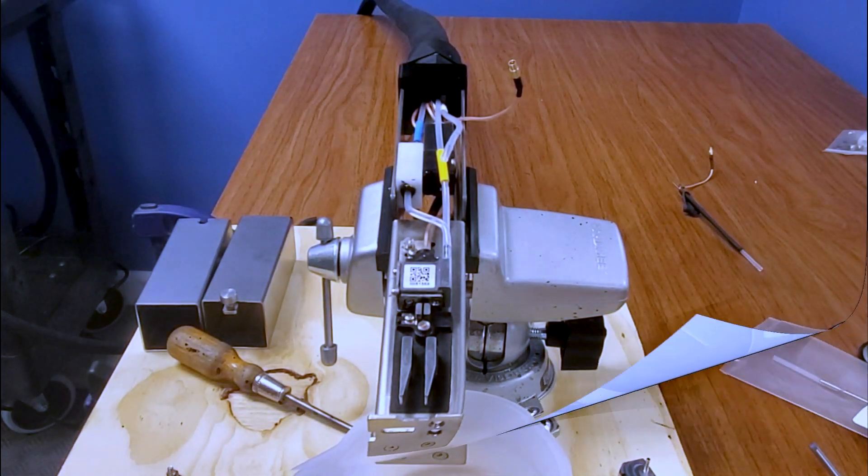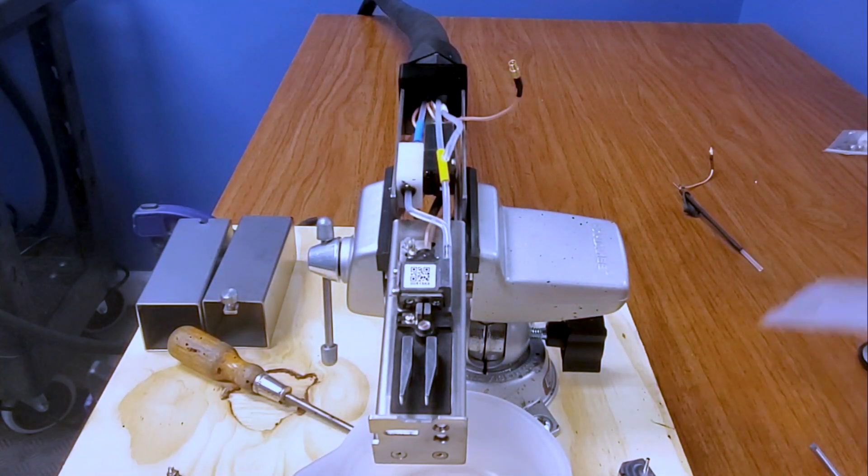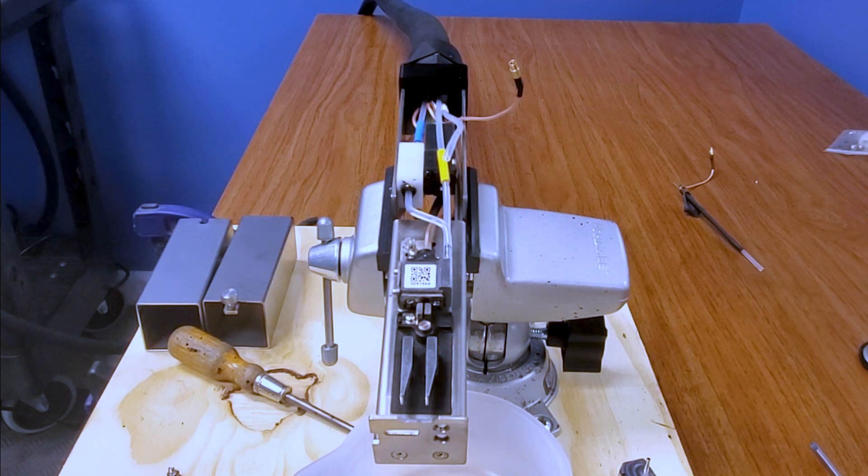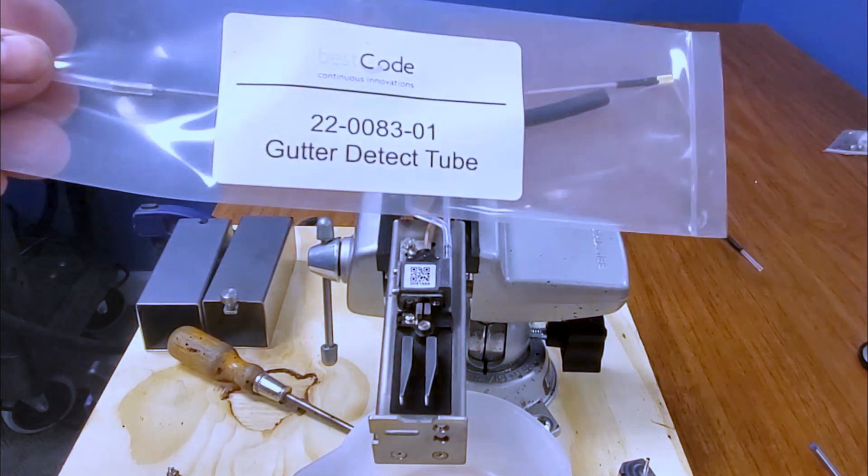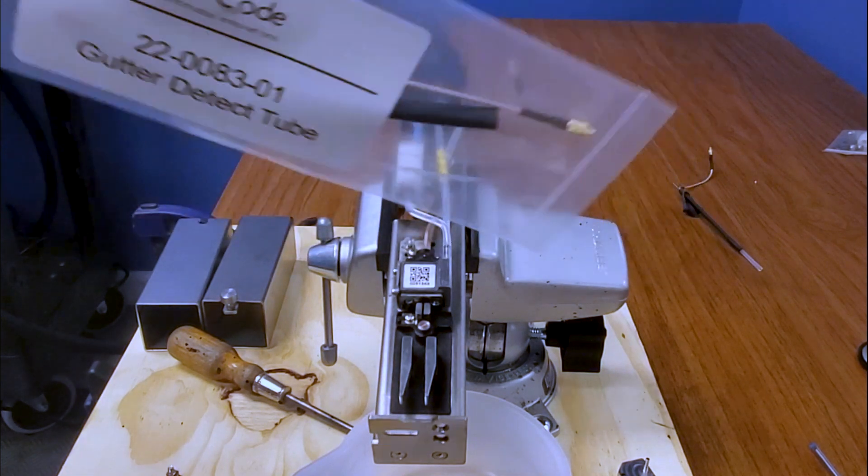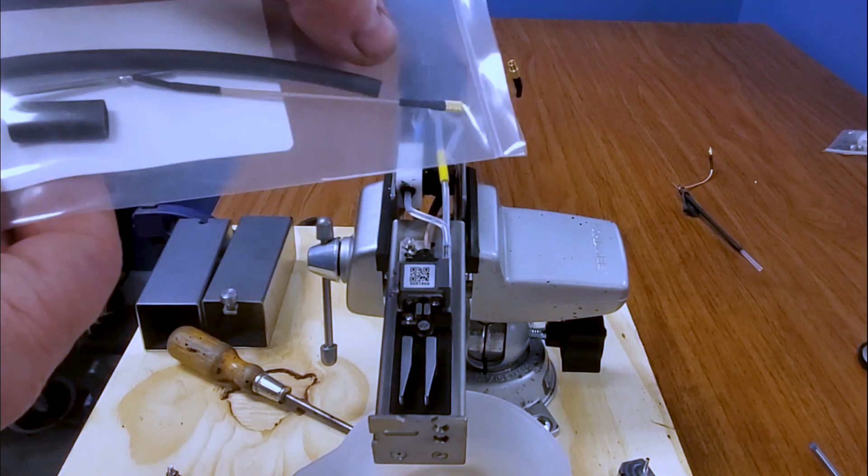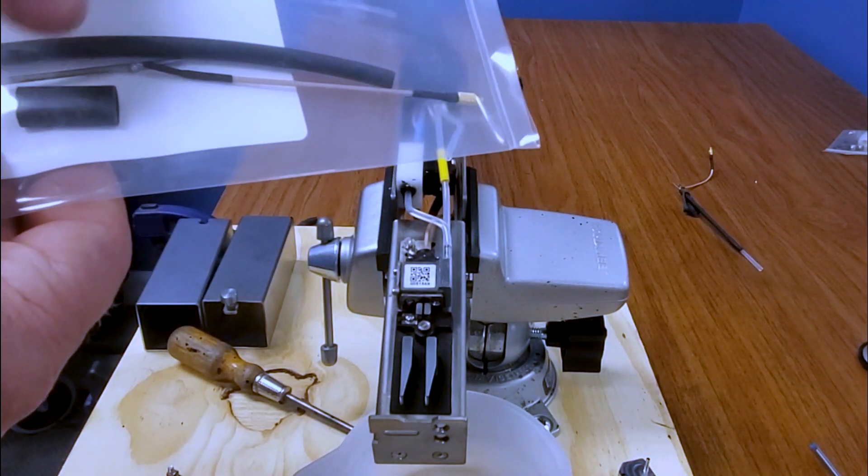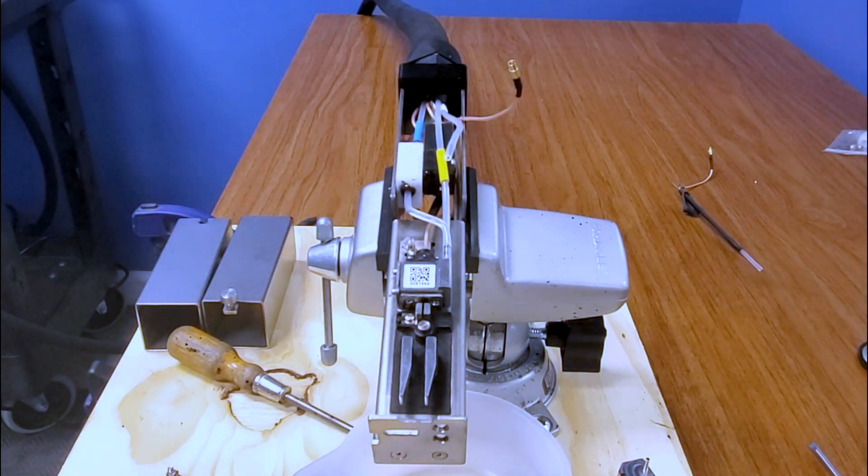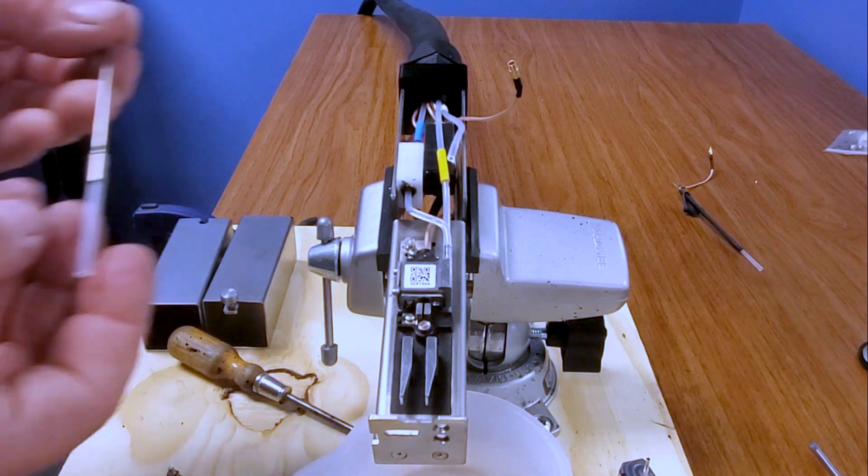Now that we have it out, we're just going to get our new one and we're going to repeat the process so we can install it. So here you have the new gutter detect. You have the heat shrink. So let's go ahead and reverse the process.